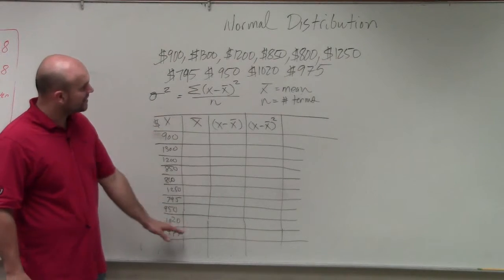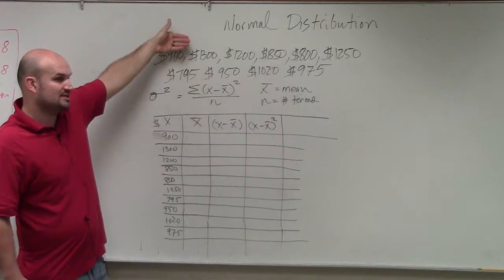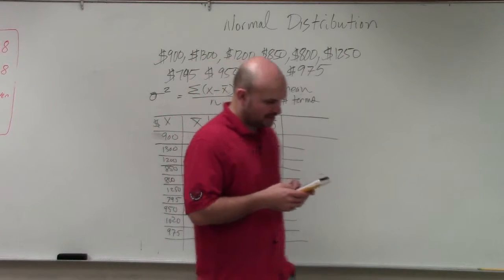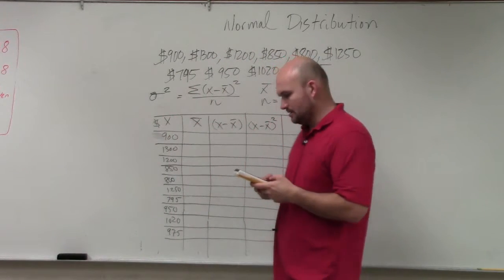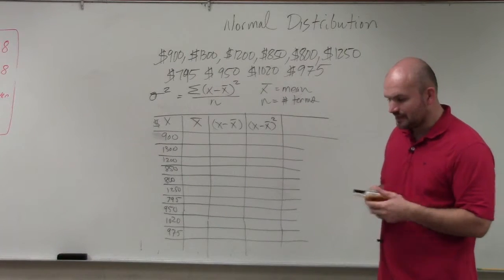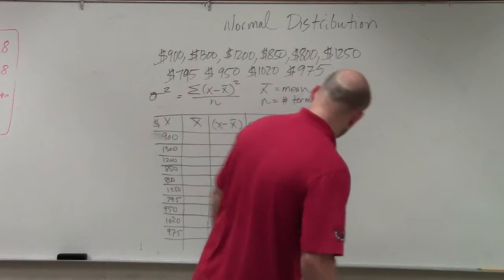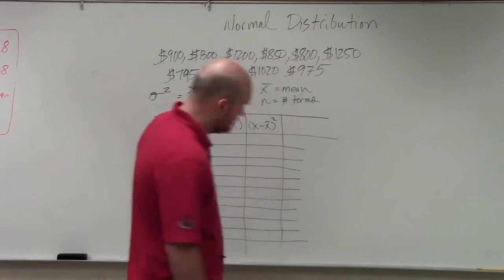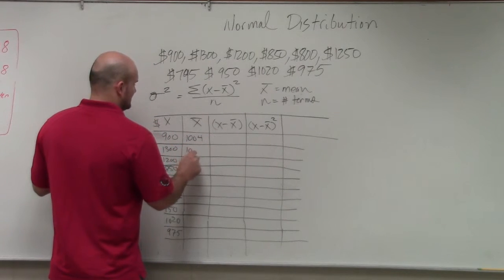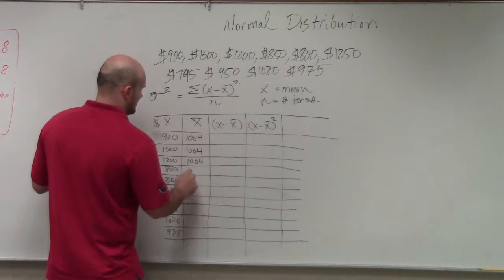I listed them all up. We need to go ahead and find the mean. So we're going to add up all the terms and divide it by how many terms we have, which in this case is 10. So I added them all up in my calculator. And I get 10,040. Divide that by 10, and I get 1,004. So 1,004 is my mean. Now that is for every term in this column.